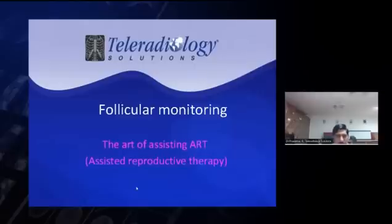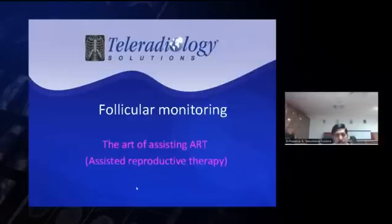Follicular monitoring is basically a simple technique to see how the follicles become dominant follicles, and then we follow it up until it ruptures to give the mature oocyte. Basically, it is an art of supporting the gynecologist before they do intrauterine insemination or in vitro fertilization.